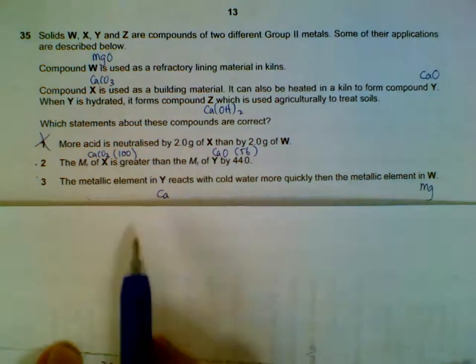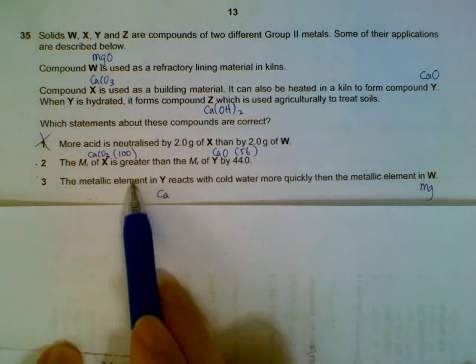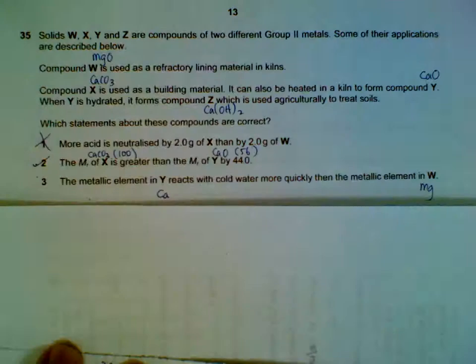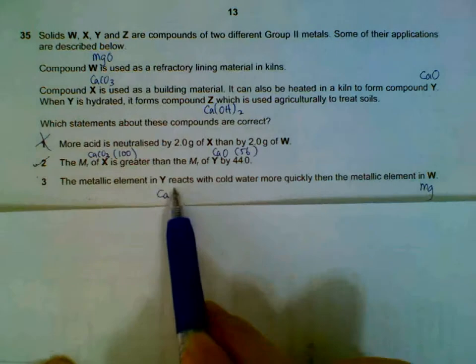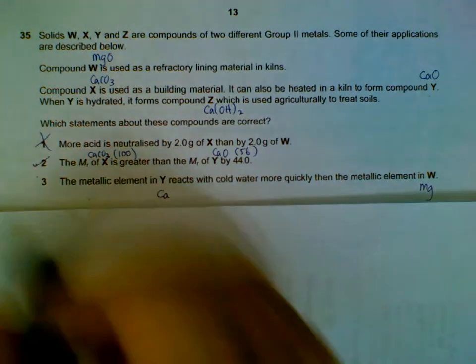The molar mass of X is greater than molar mass of Y. Comparing your calcium oxide versus calcium carbonate, there's a difference of 44. Metallic element in Y - calcium reacts more quickly than magnesium. That is also correct.